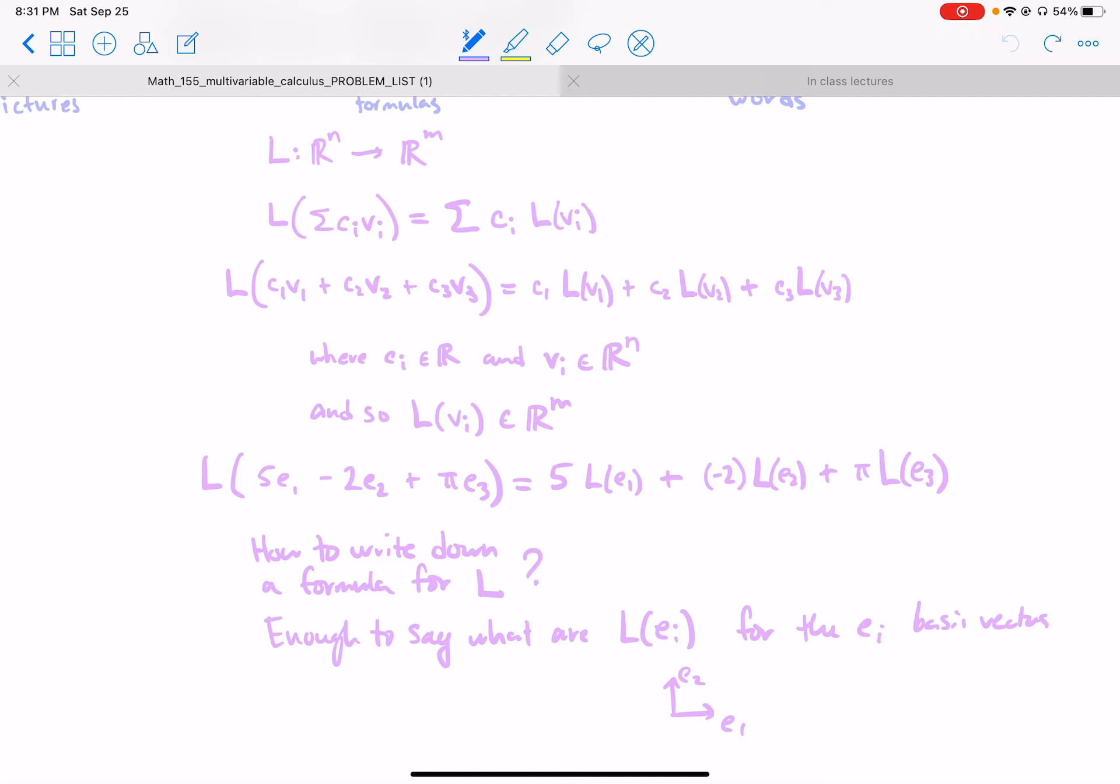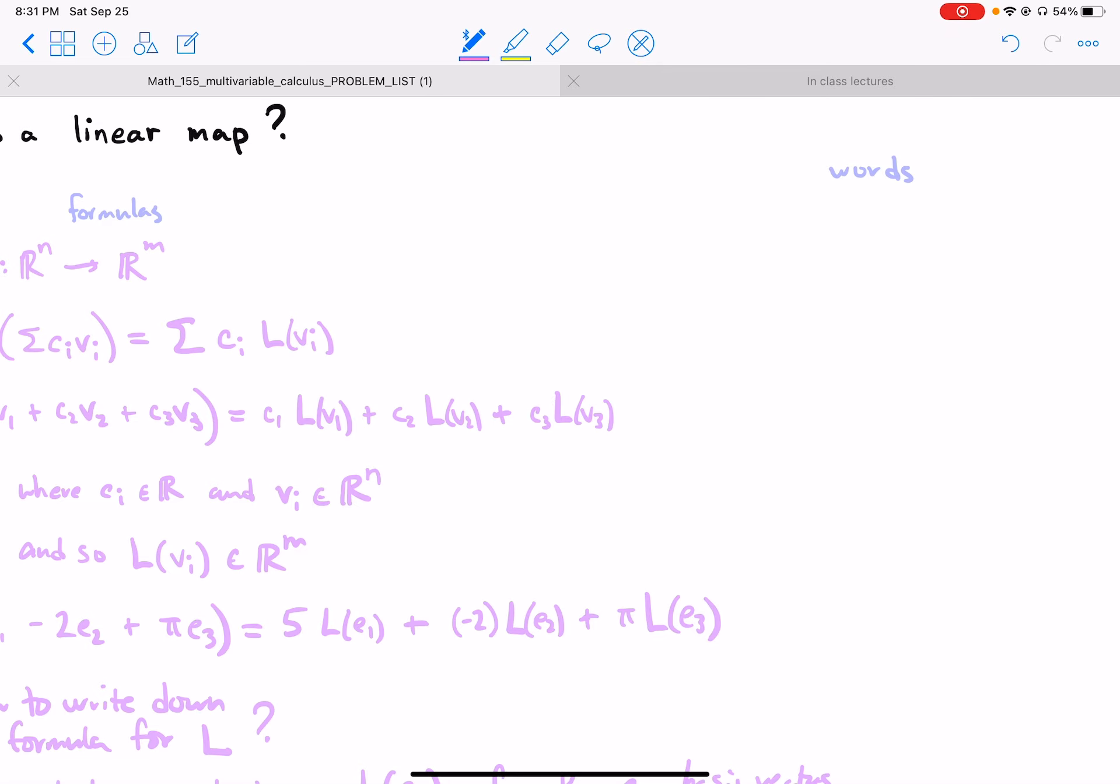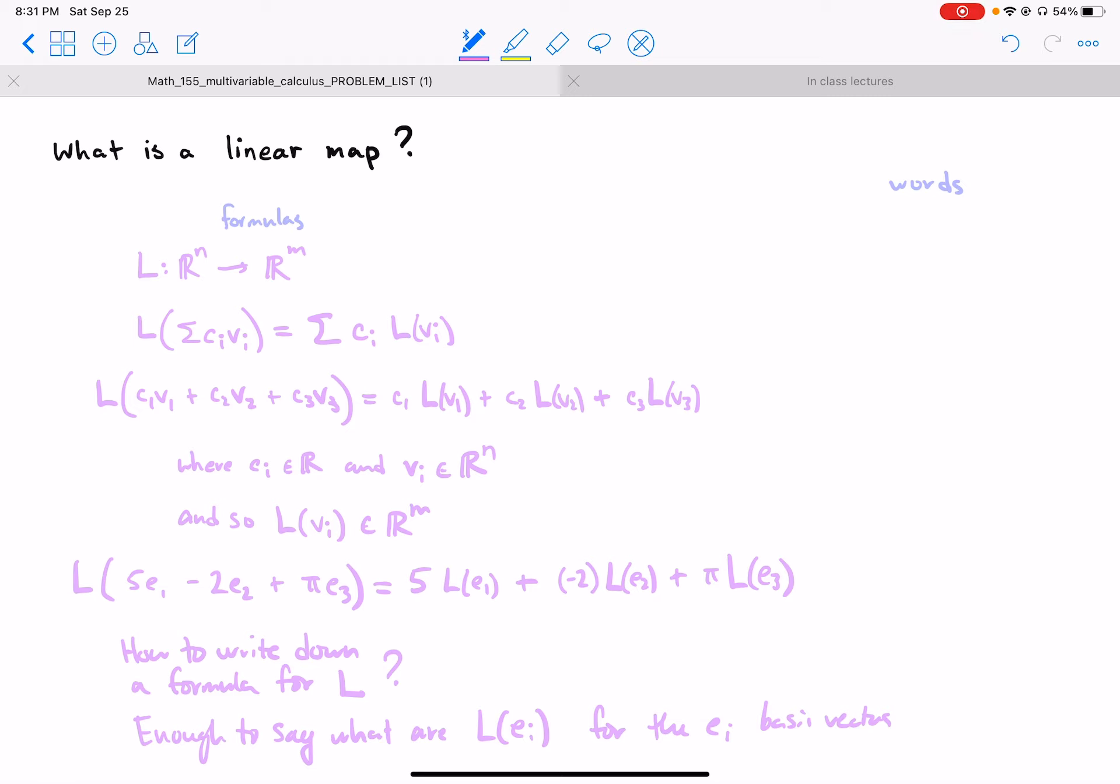Okay, so in words, I would say this: in words, what is a linear map? A map that respects linear combinations of vectors. Or I could say it takes a linear combination of vectors to—the map takes an input, let's say even a linear combination of input vectors, to a linear combination—in fact, the corresponding linear combination of output vectors.